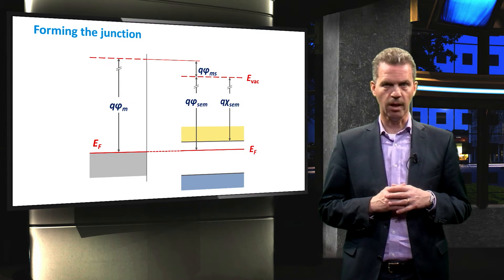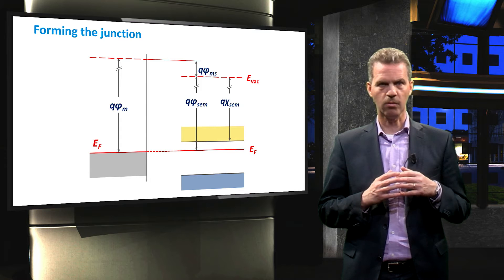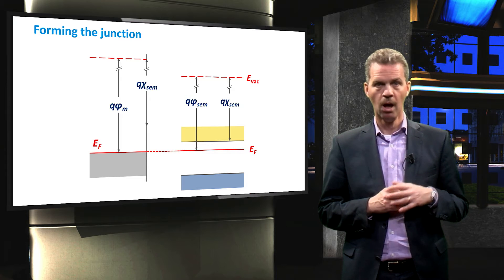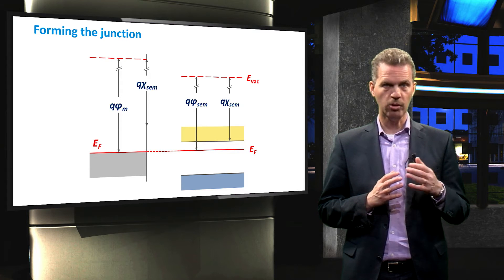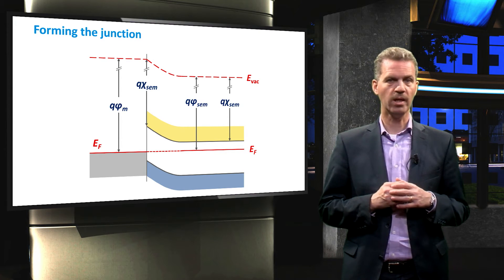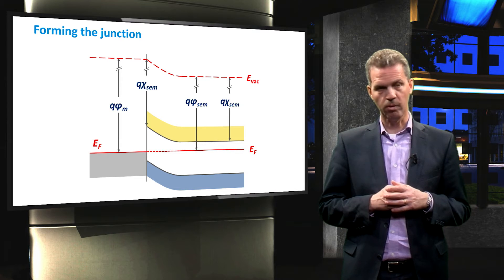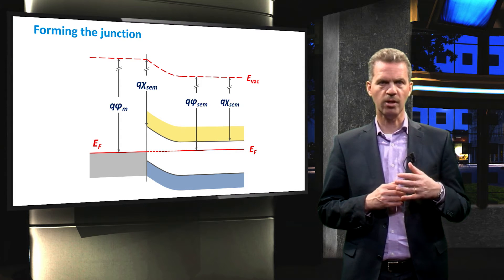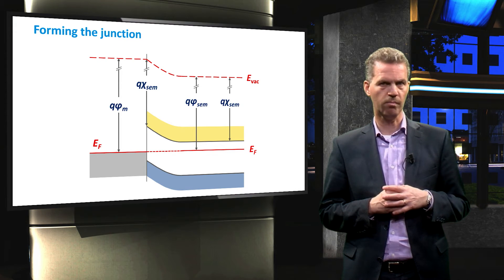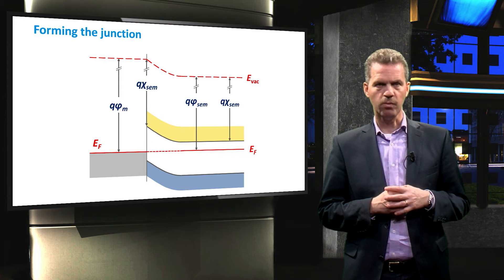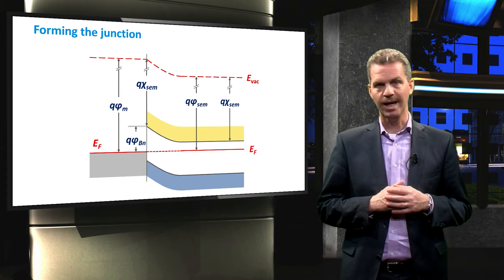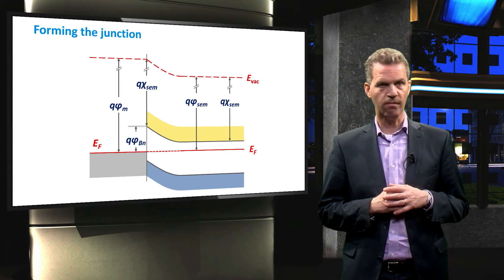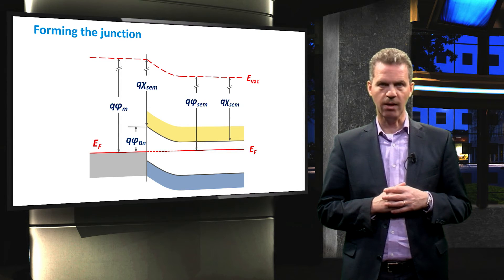We now bring the two materials towards each other. In order to connect the semiconductor band diagram to the metal band diagram, we need to realize that at the junction the vacuum level must be continuous. When we know where the semiconductor band diagram joins that of the metal, we can draw the region in between. This region varies parabolically with position. In the quasi-neutral region the bands of the semiconductor are horizontal, reflecting no voltage drop. The energy difference between where the conduction band meets the metal and the Fermi level is called the Schottky barrier. This barrier represents the energy required for electron injection from the metal to the semiconductor and is a characteristic of this junction.